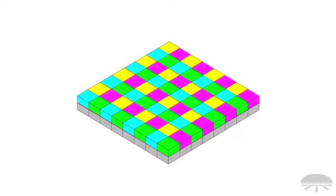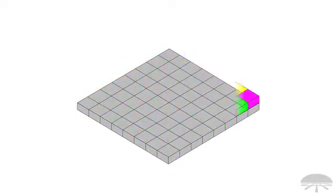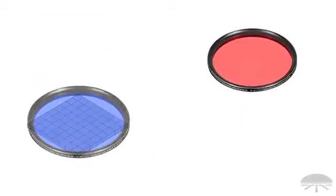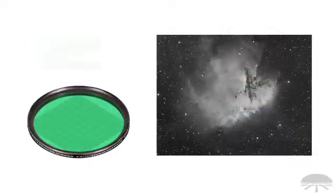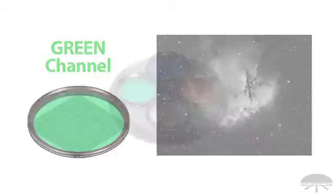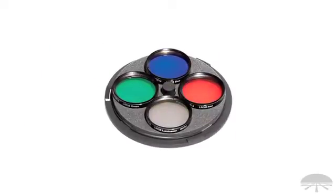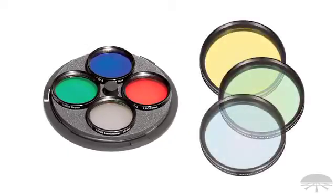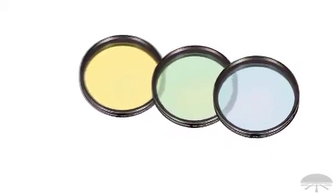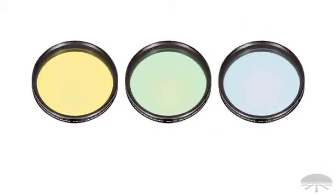Monochrome chips have the exact same pixel arrays as a color chip that lack the presence of a color filter matrix in front of the sensors. Monochrome cameras can capture a single black and white exposure, or they can capture multiple exposures while using additional filters to highlight specific colors. Once a single wavelength is captured, it is assigned a color channel. You can use a set of LRGB filters to capture the red, green, blue, and luminance channels, or mix and match narrowband filters to capture the light and gases from the emission nebulae. The three narrowband filters used for tricolor imaging are hydrogen alpha, sulfur 2, and oxygen 3.